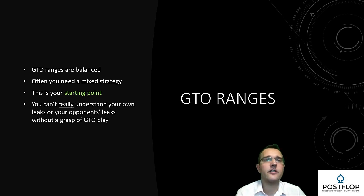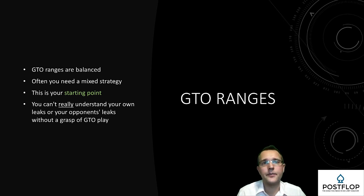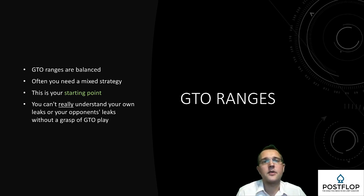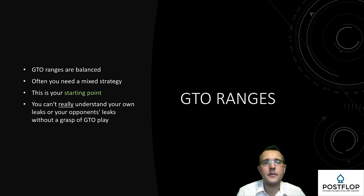Coming back to the basics of GTO theory: every GTO range is perfectly balanced such that it cannot be exploited. If you do too much raising, too much calling, or too much folding, you become exploitable. A feature of range balancing is having individual hands in more than one range — keeping a hand in both your calling and raising range. This is known as a mixed strategy. For example, if you're holding top pair weak kicker on the flop, you'll very often c-bet, but you should also sometimes check with it. A perfect strategy often involves staying balanced and mixed.